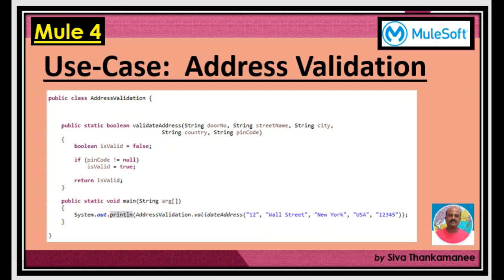Now let's take a look at an improved version of this code. This is better than the previous piece because it includes finer details that act like an interface configuration — the class name, function name, return type, access qualifier, and list of parameters. These clearly define how to invoke the function. Since it is static, it can be accessed across instances via the class itself without creating an instance.